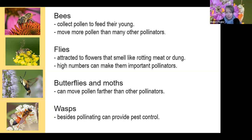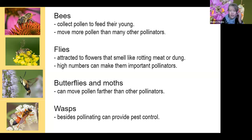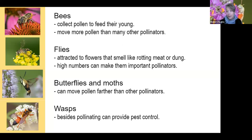Butterflies and moths are also familiar pollinators. They're focused mostly on gathering nectar rather than pollen, but they do pick up pollen as they drink nectar. One unique characteristic of butterflies and moths as pollinators is that they tend to fly farther than a lot of other pollinators, which makes them important for plants that are spreading their genes across the landscape.